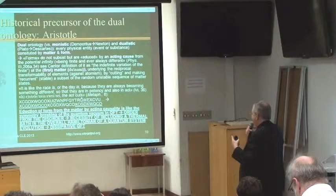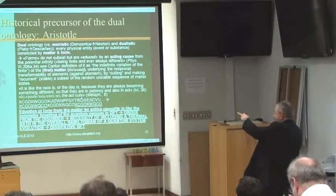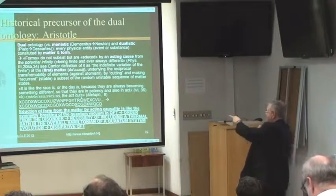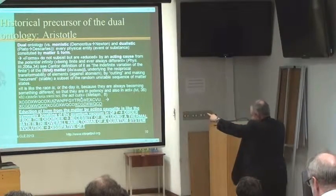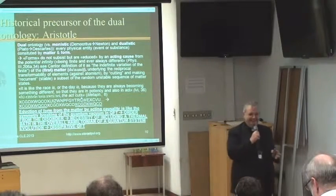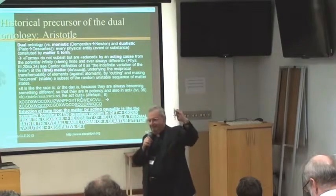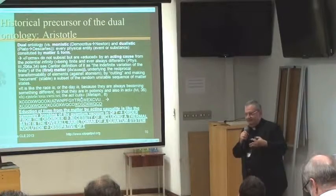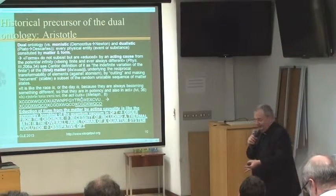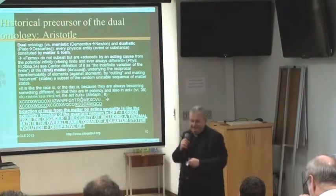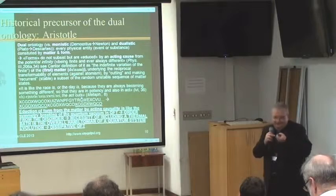By cutting and making recurrent — that is, stable — a subset of the random sequence of matter states, the race or the day always become something different, so they are in potency and also in act. It is not possible to derive diversity from identity, according to the famous antinomy of one and two in Plato's metaphysics. The powerful idea of Aristotle is to do the opposite: to define identity by making recursive and recurrent the difference — that is, the randomness according to our approach; the always-being-different of the matter substrate.